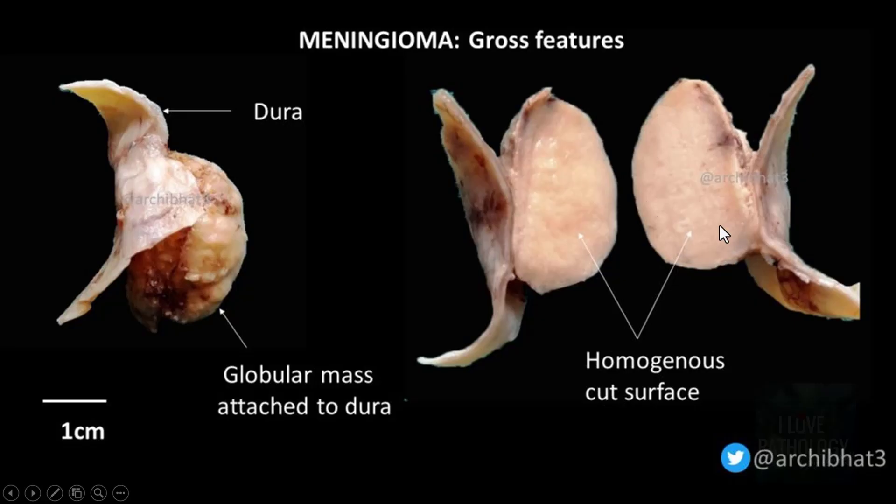On cut surface, it is usually homogeneous. The cut surface is often finely granular or firm in consistency, and can be finely gritty or sand-like, with a fleshy and tan appearance.